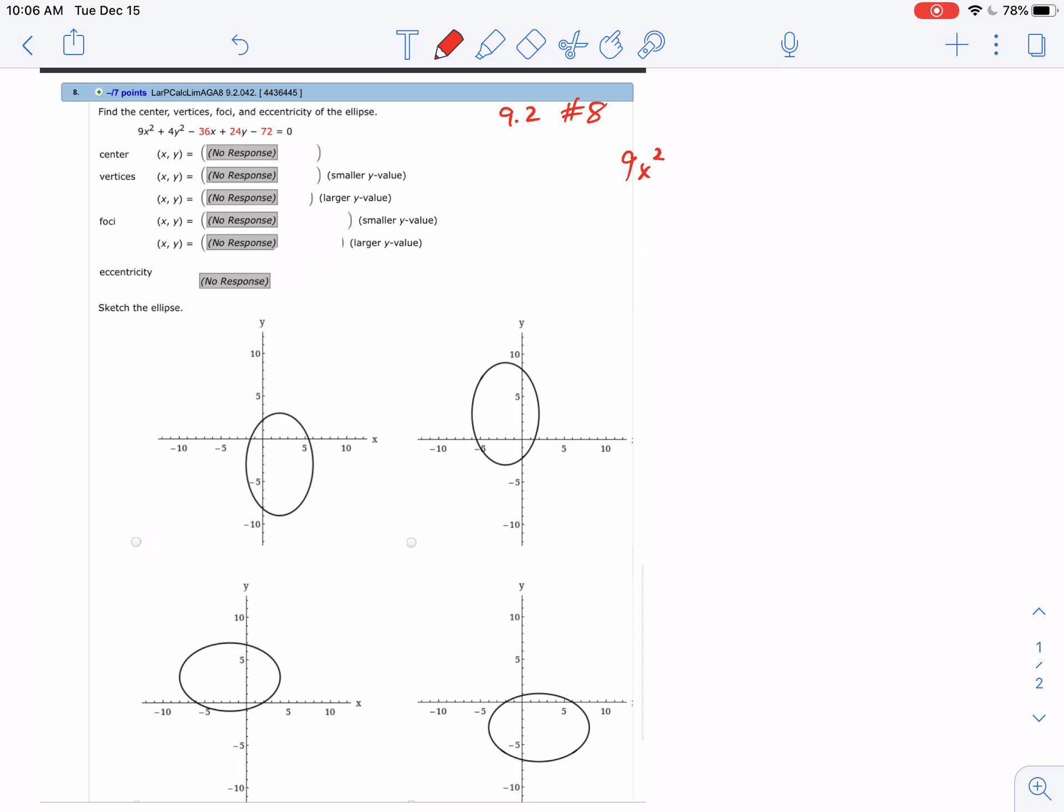I'll take the 9x squared and put the 36x near it, then the 4y squared and the 24y next to that. Remember, the 72 will move to the other side and become positive.